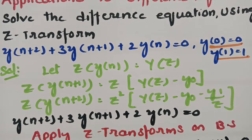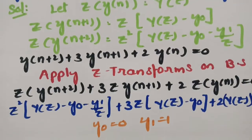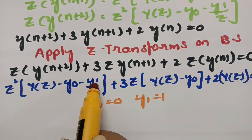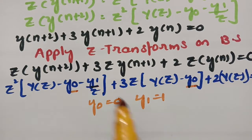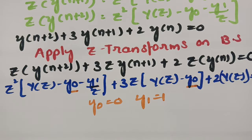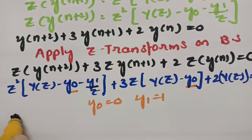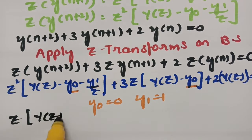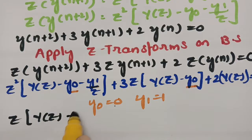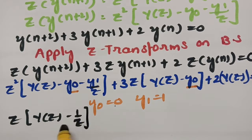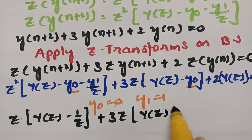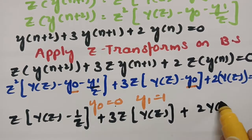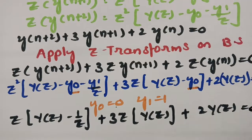Substituting y(0) as 0 and y(1) as 1, after substituting these values: Z²·Y(z) minus 1/Z plus 3Z·Y(z) plus 2·Y(z) equals 0.